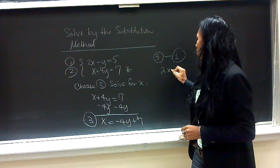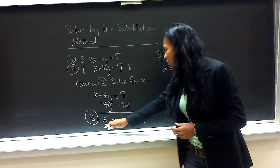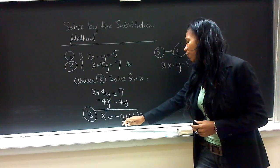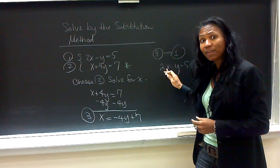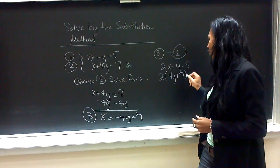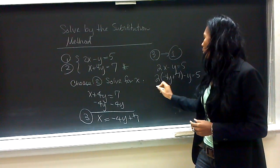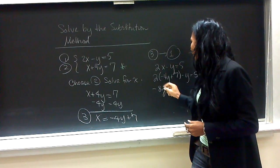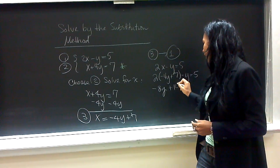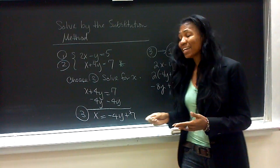So, 2x minus y is equal to 5. Now, what we do is we put this value, which is negative 4y plus 7, in place of x. We make sure and write our parentheses. And we distribute the 2. We get negative 8y plus 14 minus y is equal to 5. We combine the like terms.